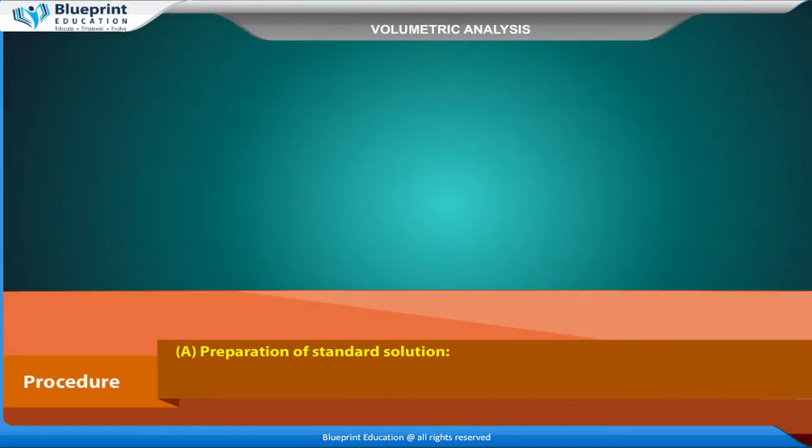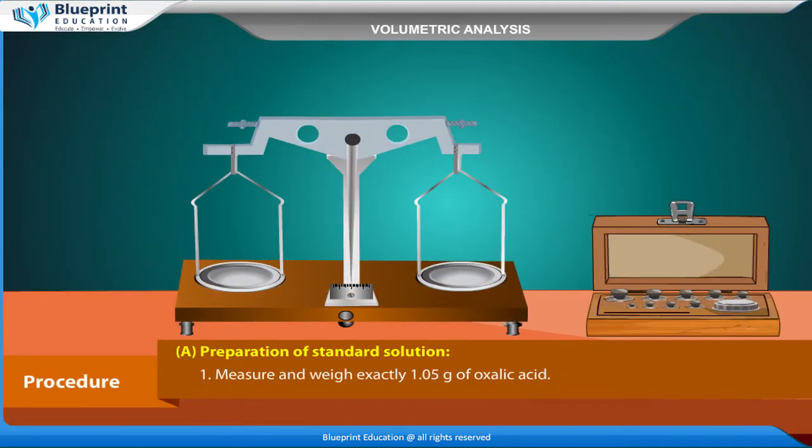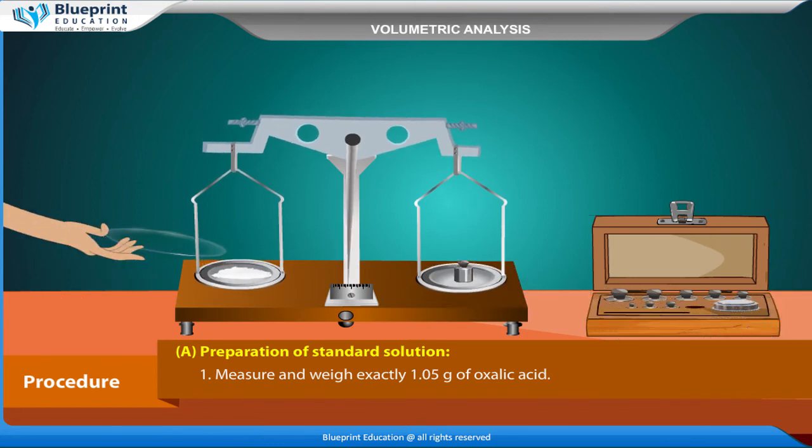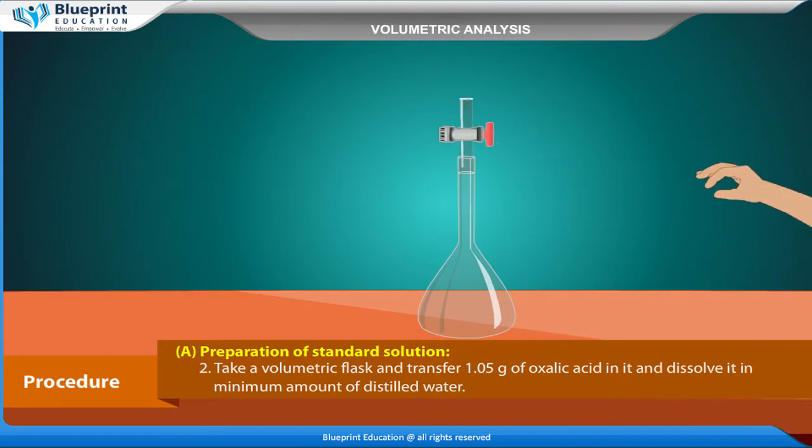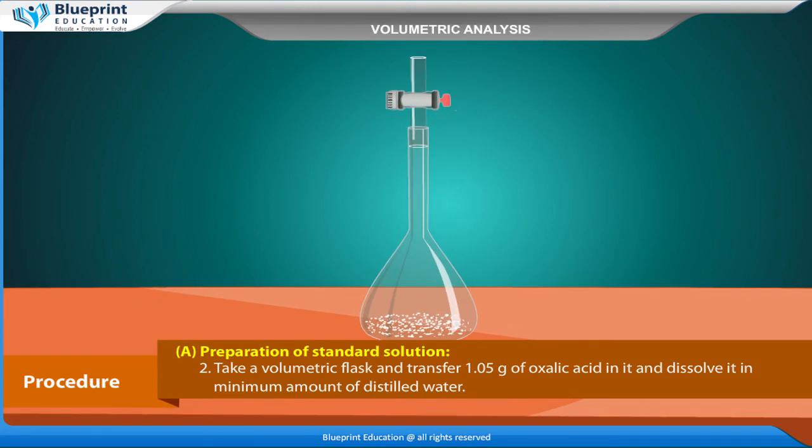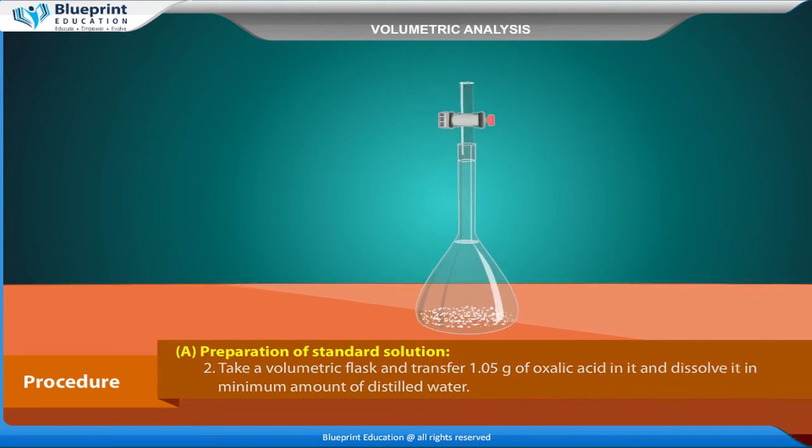Procedure - Preparation of standard solution: Measure and weigh exactly 1.05 gram of oxalic acid. Take a volumetric flask and transfer 1.05 gram of oxalic acid in it and dissolve it in minimum amount of distilled water.